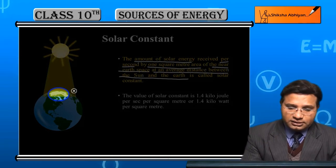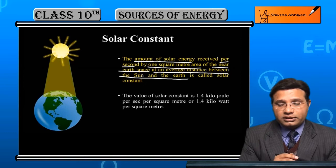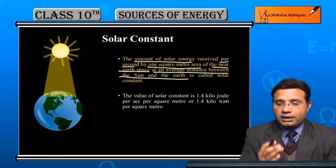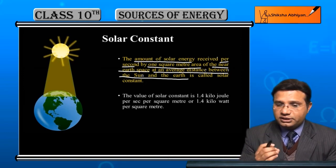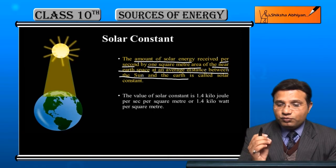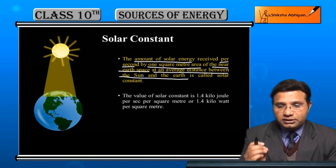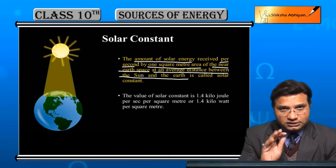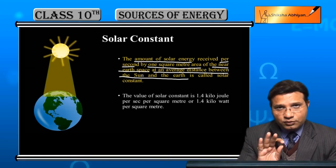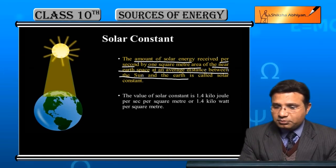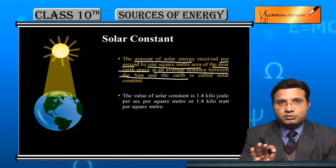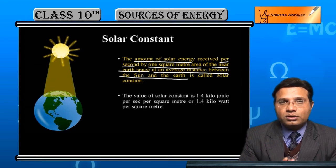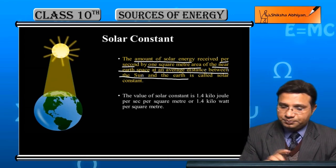Let's look at the definition once more. The amount of solar energy received per second by one square meter area of the near-Earth space — this near-Earth space is at an average distance between the sun and the Earth — is called solar constant.